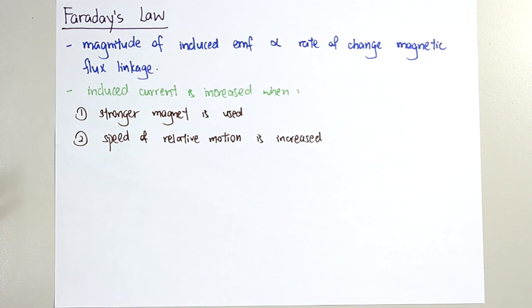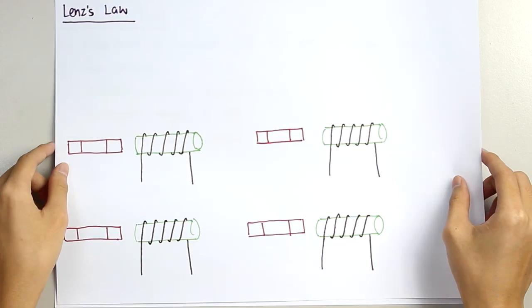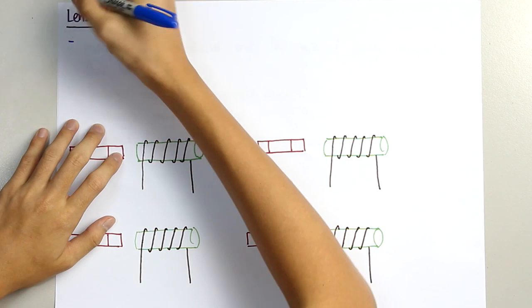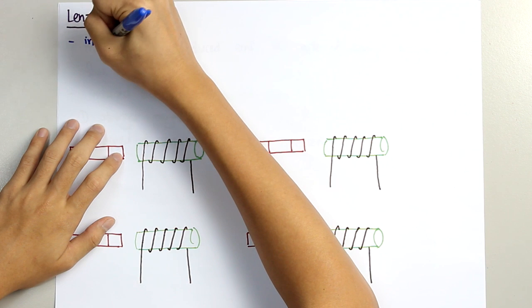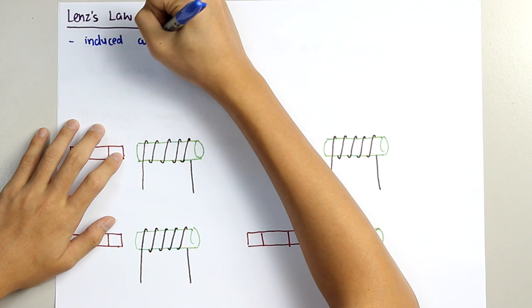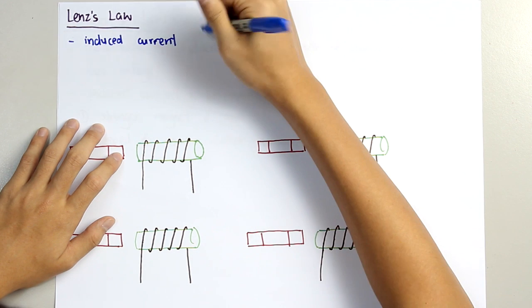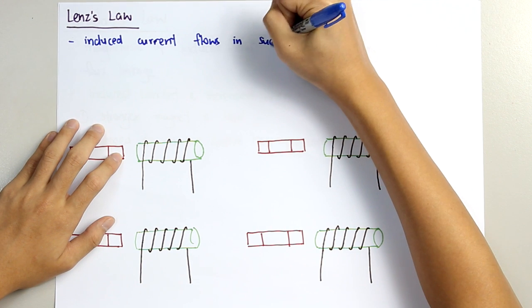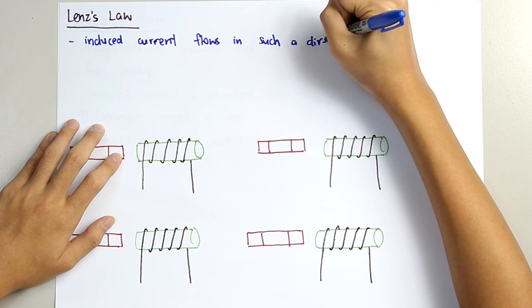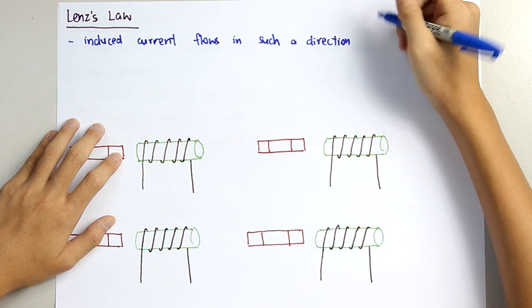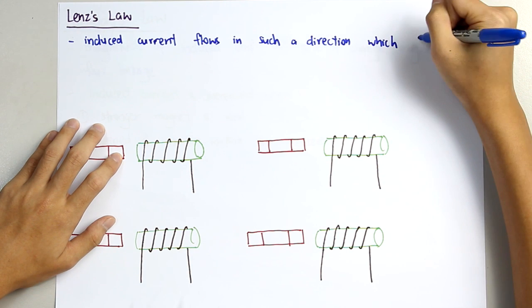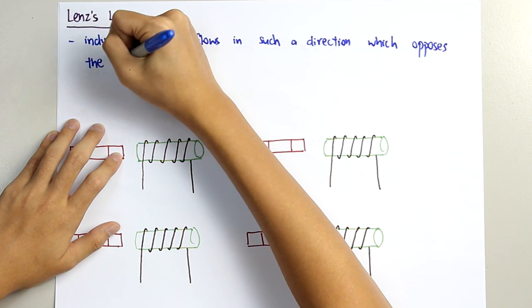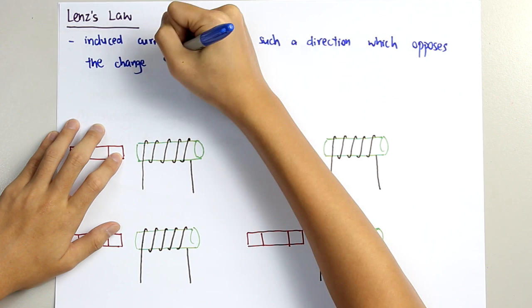Now we move on to Lenz's law. Lenz's law states that the induced current always flows in such a direction which opposes the change causing it.